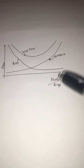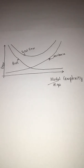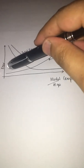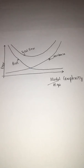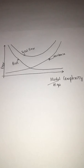On your x-axis, you have something called model complexity or algo complexity — nothing but the complexity of your model. On your y-axis, you have your error calculations. Model complexity ranges from simpler algorithms like linear regression, to more complex ones like decision trees, random forests, boosting algorithms like XGBoost, and even deep learning algorithms.